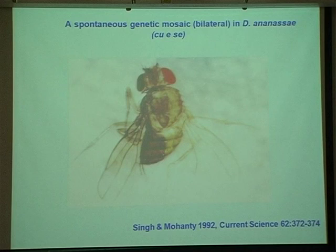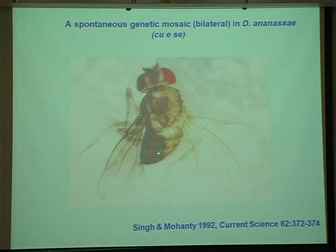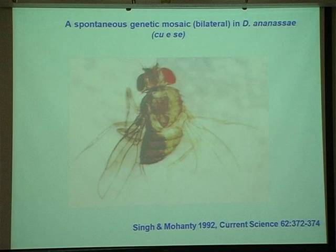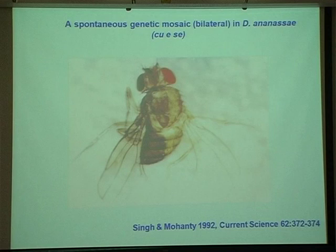This spontaneous genetic mosaic in Drosophila ananassae — you can see here — the left part is curved wing (CPI), with ebony body color, and the right side is normal. Half is having normal, half is having mutation. We were doing some experiments on male crossing over and found a male having this bilateral mosaic. In the literature, I never found this type of mosaic for an autosomal gene — the first report of this kind.